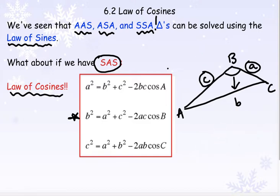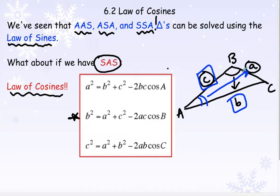For example, if I'm given side B and side C and angle A, then I can find the side across from angle A. I'd be referring to this formula: if I want to find A, I take B squared plus C squared minus two times B times C times the cosine of angle A, because that angle is between these two sides. So: two sides and the angle in between them.